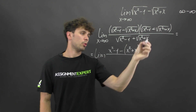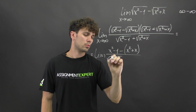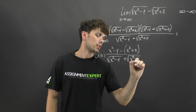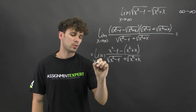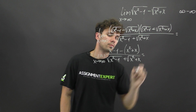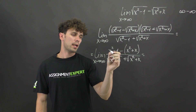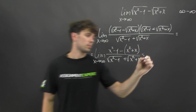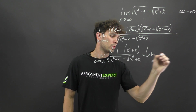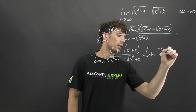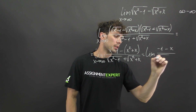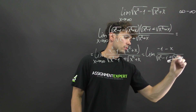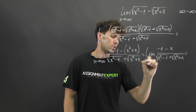This gives us (x squared minus 1) minus (x squared plus x) in the numerator, while the denominator is (square root of x squared minus 1, plus square root of x squared plus x), while x tends to infinity. In the numerator, x squared minus x squared gives us 0, so we are left with negative 1 minus x.